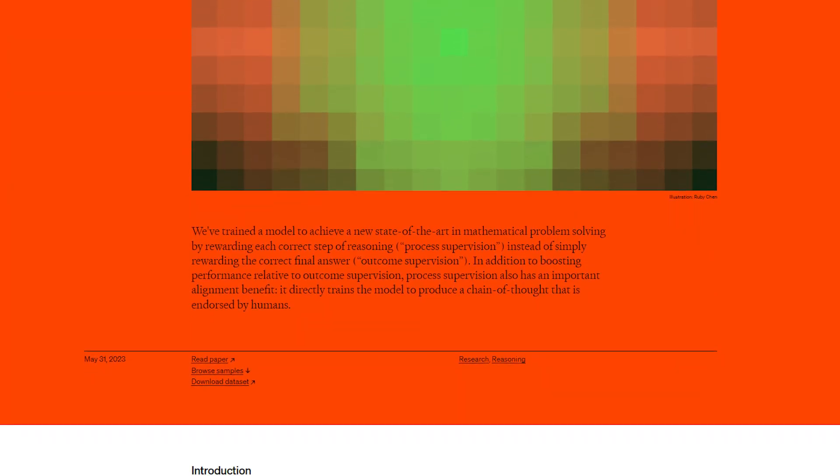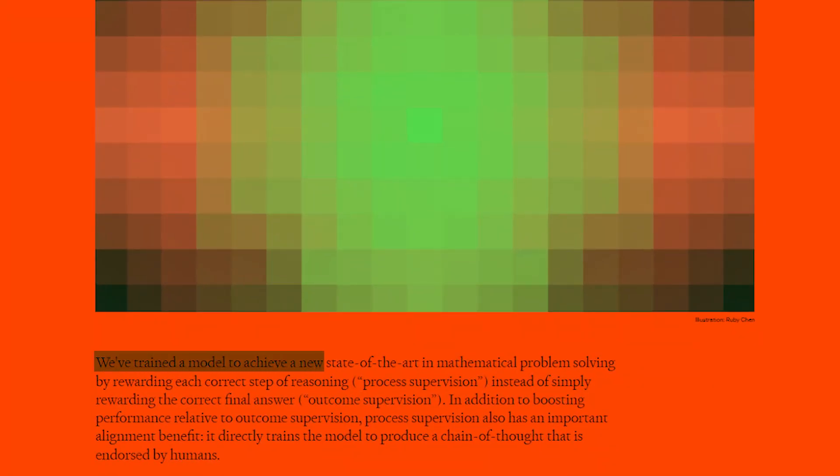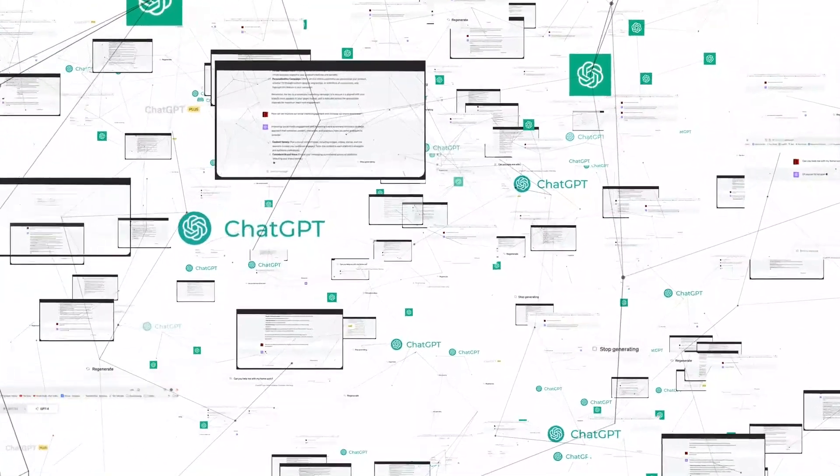Back in May, OpenAI published an article saying they trained a model to achieve a new state-of-the-art in mathematical problem-solving by rewarding each correct step of reasoning instead of simply rewarding the correct final answer. If they use Q-learning or a similar method to achieve this, that would unlock a whole new set of problems and situations that ChatGPT would be able to resolve natively.